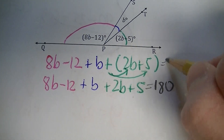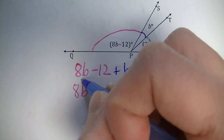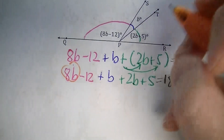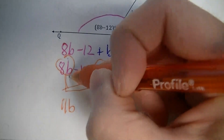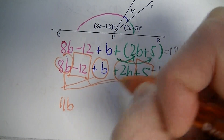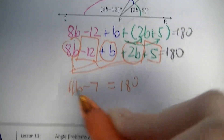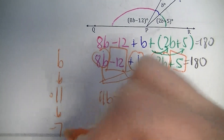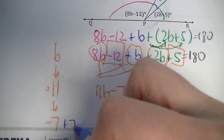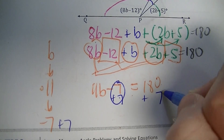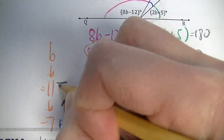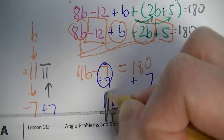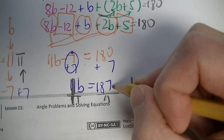Now let's simplify and solve for B. Combine the like terms: the B terms add up to 11B. And negative 12 plus 5 is negative 7. So 11B minus 7 equals 180. The inverse operation of subtracting 7 is to add 7 to both sides. Negative 7 plus 7 is 0, and 180 plus 7 is 187. So 11B equals 187. Divide both sides by 11: B equals 17.